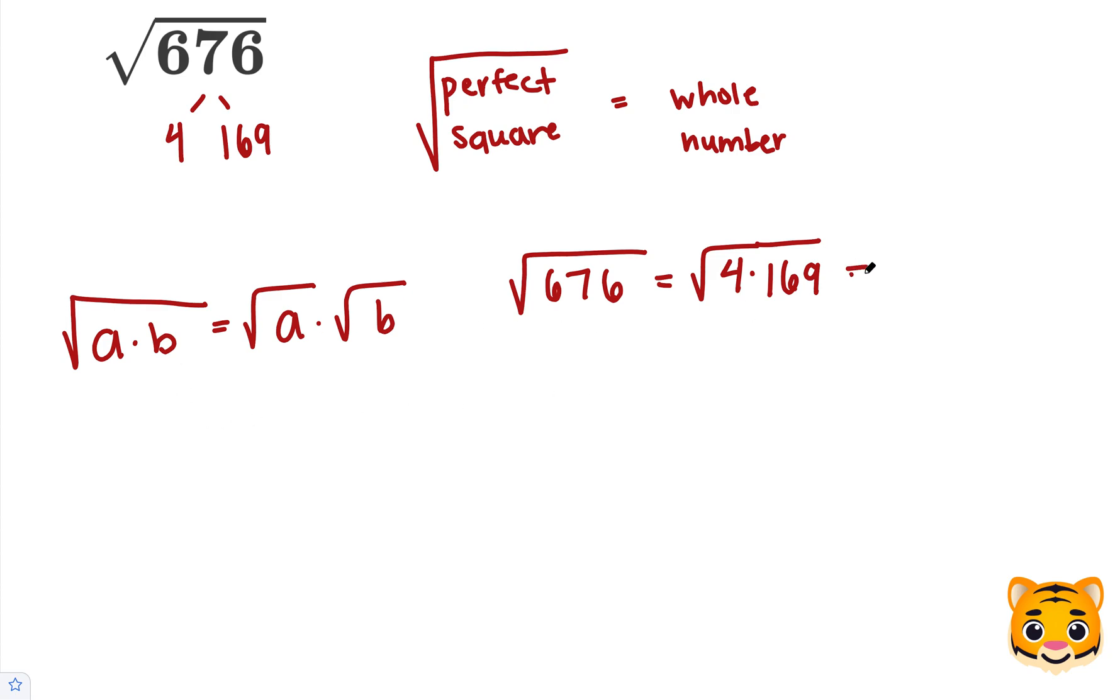Using our math rule, we can then simplify this to the square root of 4 times the square root of 169.